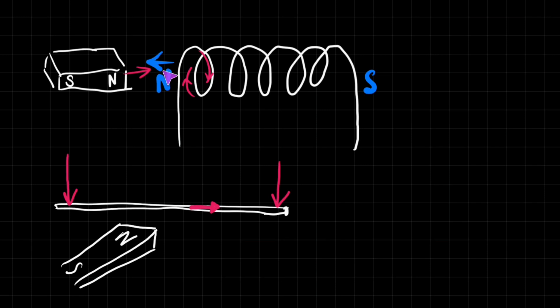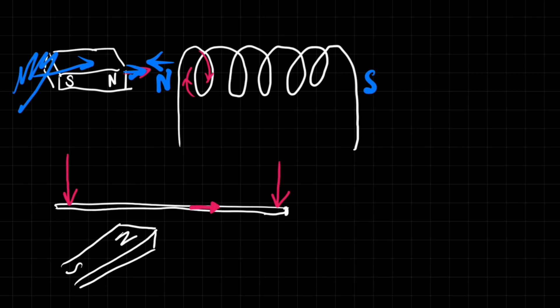It only makes sense if the coil creates a North Pole on the side facing the incoming North Pole of the magnet, so the two repel each other. That means you have to actually push the magnet in against the opposing force — you do work. The energy gained by the electrons as the current is induced comes from the work you do pushing the magnet against those repulsive forces.